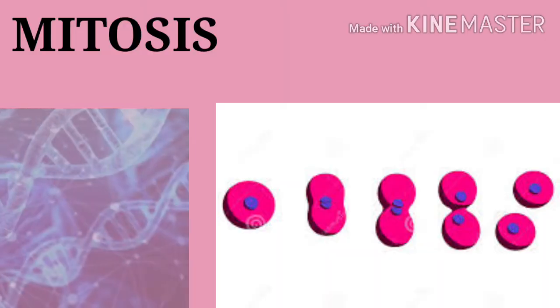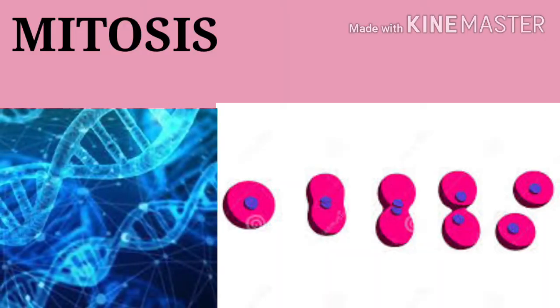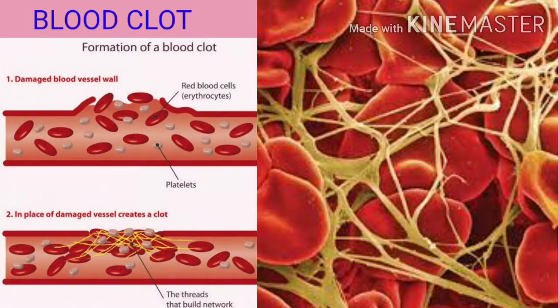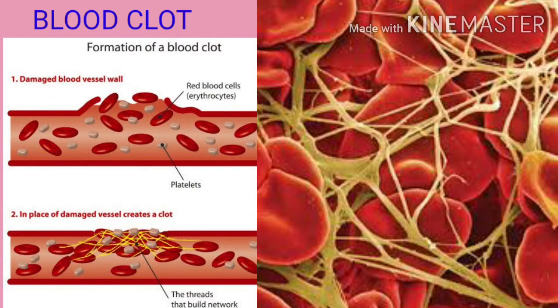Mitosis is a fundamental process for life. During mitosis, a cell duplicates all of its contents, including its chromosomes, and splits to form two identical daughter cells. For example, if you cut your finger and bleed, soon a blood clot forms to stop the bleeding. This brings in various chemicals to the site that stimulate skin cells to divide and heal the wound.